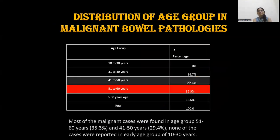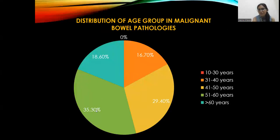Regarding the distribution of age groups in malignant bowel pathology, most malignant cases were found in the age group of 51 to 60 years, followed by 41 to 50 years, and none of the cases were reported in the early age group of 10 to 30 years. Specifically, 35.3% of cases belonged to the 51 to 60 year age group, followed by 29.4% in the 31 to 40 year age group among malignant bowel pathologies.